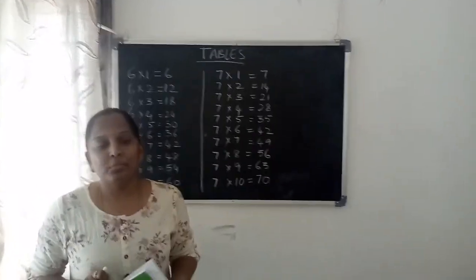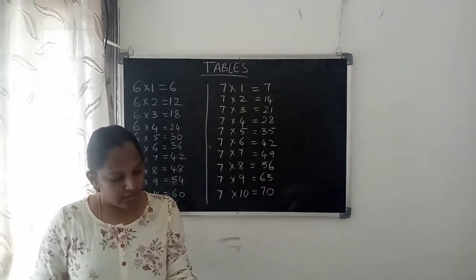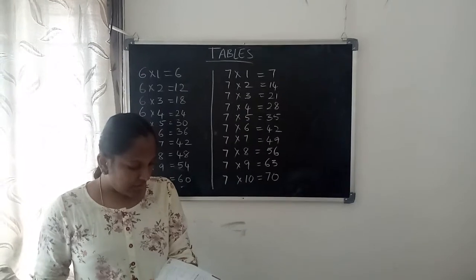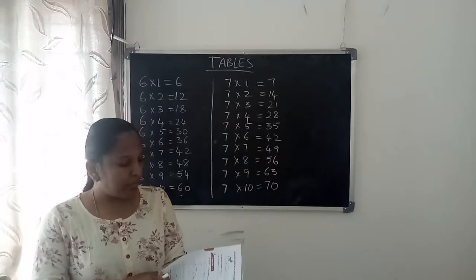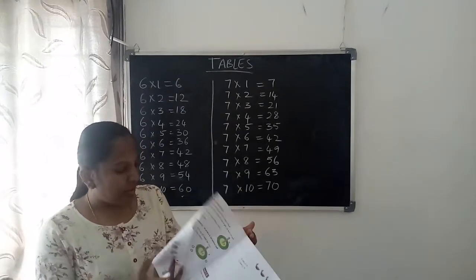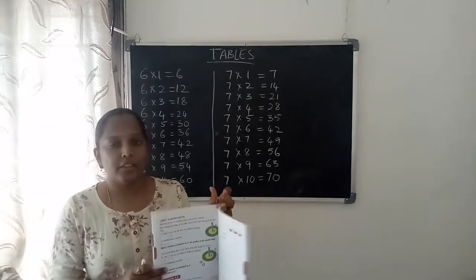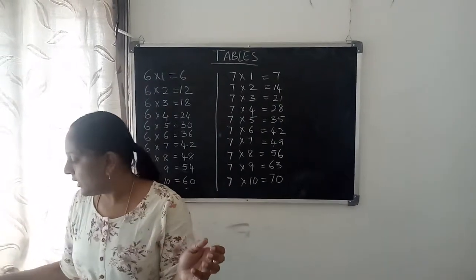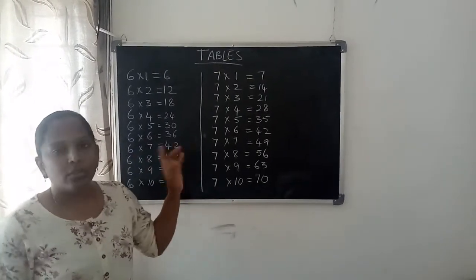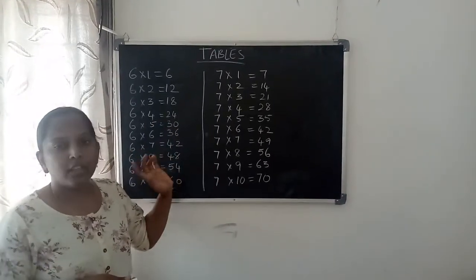Hello children, good morning, welcome to today's class. In previous sessions we discussed multiplication and repeated addition. Today we are going to discuss zero and one in multiplication. Before that, I am going to give you two tables. Till now we finished up to five tables, today I am going to give you six table and seven table.